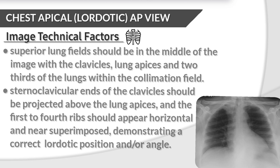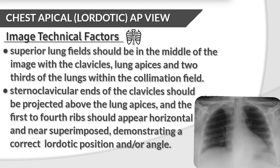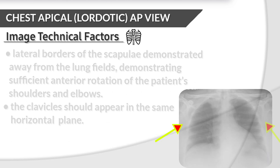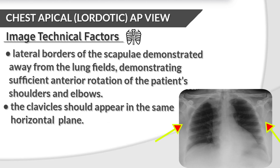Image technical factors. The superior lung field should be in the middle of the image with the clavicles. Lung apices and two-thirds of the lungs should be within the collimation field. Sternoclavicular ends of the clavicle should be projected above the lung apices. The first to fourth ribs should appear horizontally and near-superimposed, demonstrating a correct lordotic position and/or angle. Lateral borders of the scapula should be demonstrated away from the lung fields, showing sufficient anterior rotation of the patient's shoulders and elbows. The clavicles should appear in the same horizontal plane.